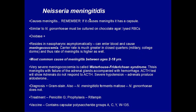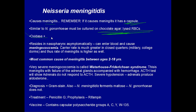Neisseria meningitidis causes meningitis. Remember: if it causes meningitis, it has a capsule — meningitis should always be associated with a capsule. Similar to Neisseria gonorrhoeae, the Neisseria genus needs to be cultured on chocolate agar, which is lysed red blood cells. Both Neisserias are oxidase positive — this is a very important distinguishing step. Neisseria meningitidis resides in the nasopharynx and is asymptomatic.